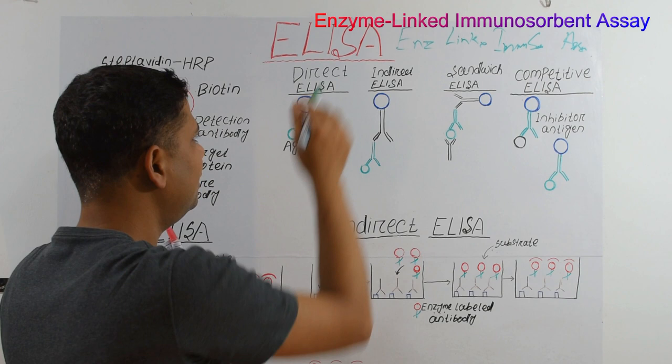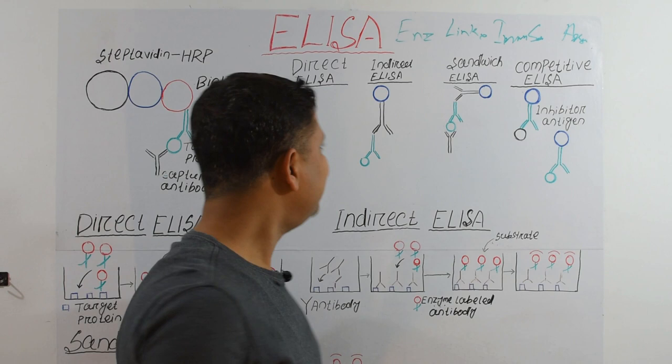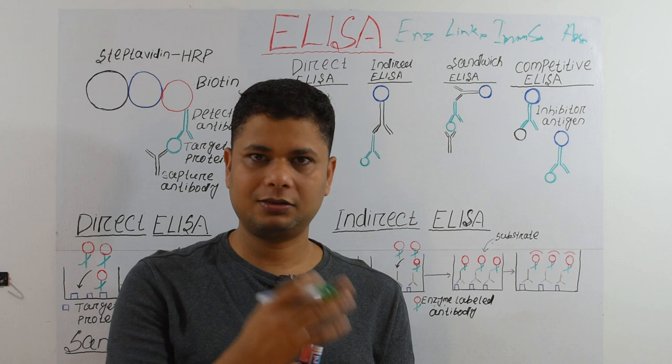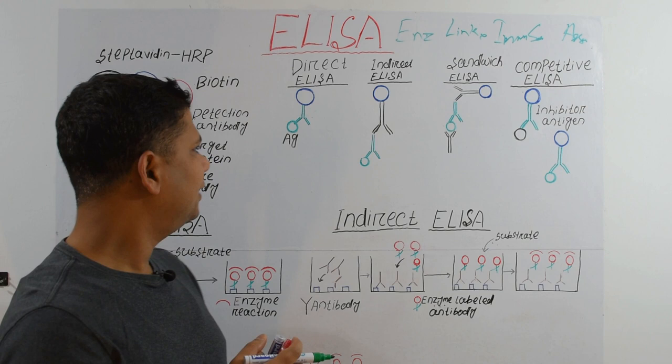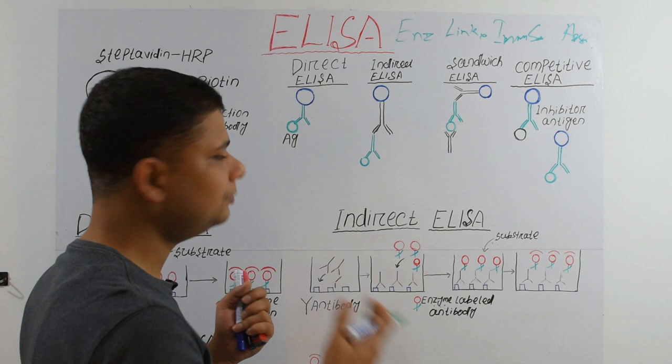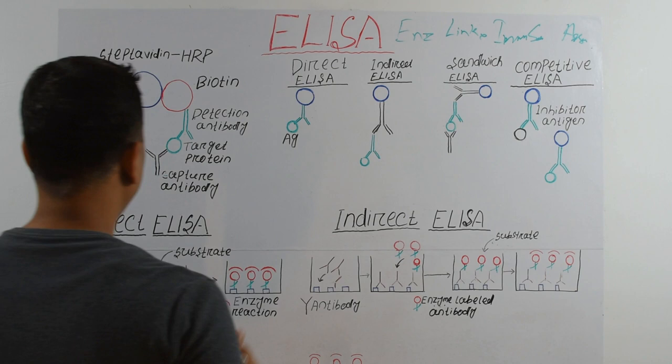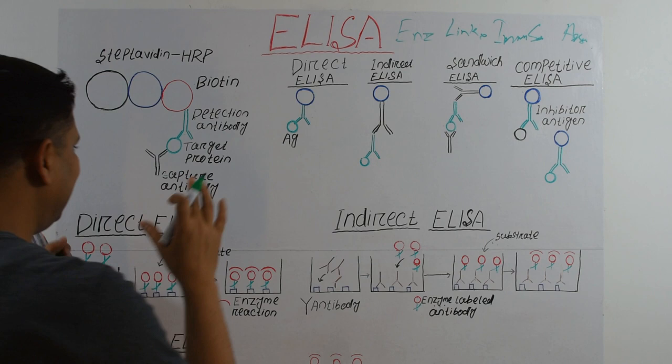ELISA is nowadays used mostly in detection of diseases and in research labs for detection of antigens, and in food processing industries to detect contamination or antigens which are toxins in food. The basic concept of ELISA involves an antigen, an antibody, and a detection method.